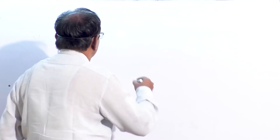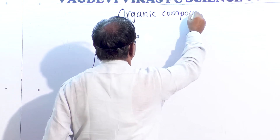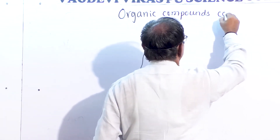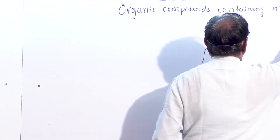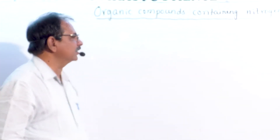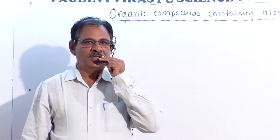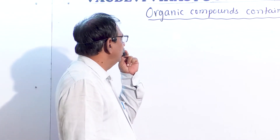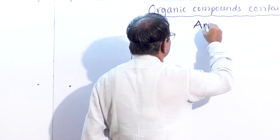Today we start the new topic in organic chemistry: organic compounds containing nitrogen. Following our discussion of alcohols, phenols, and ethers, today we will discuss amines — one type of nitrogen-containing compound.